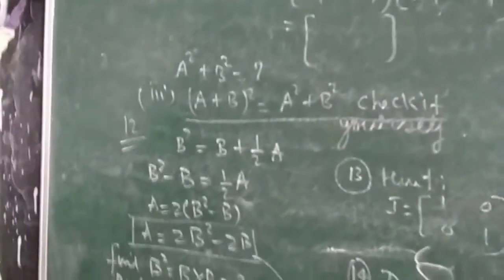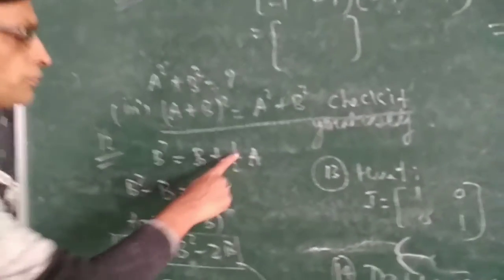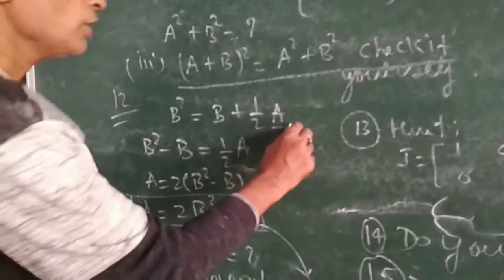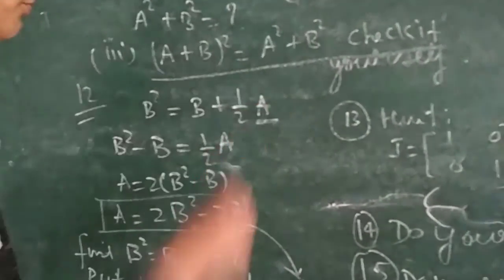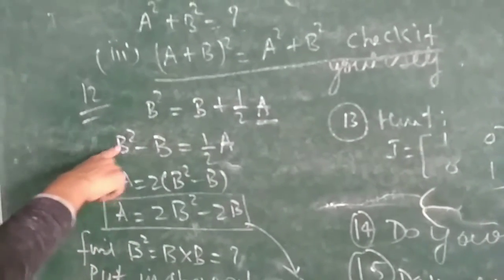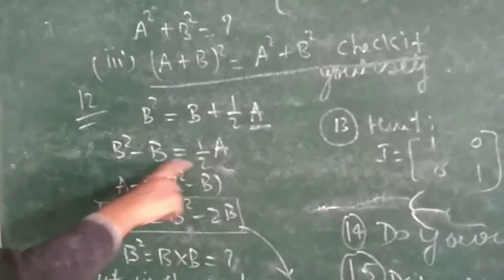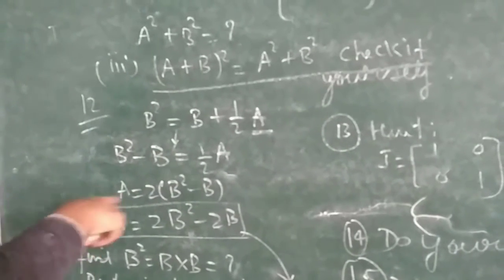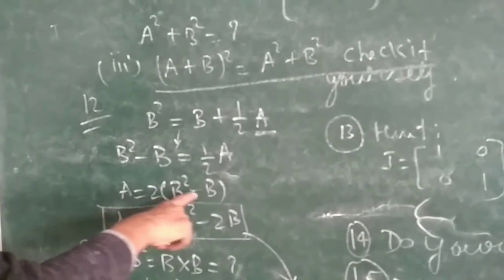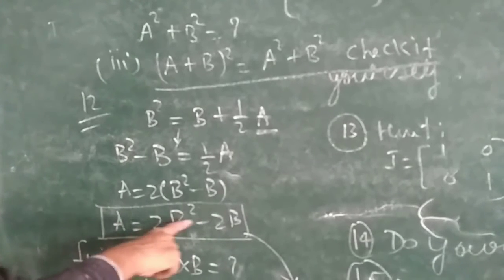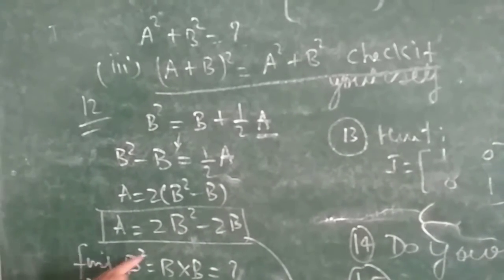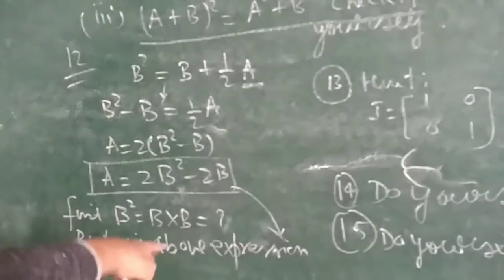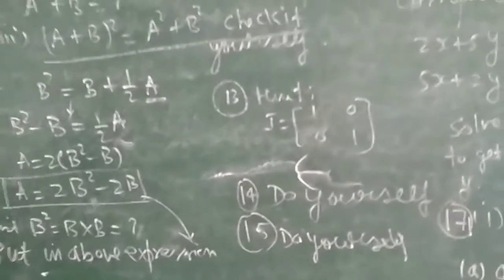Now question number 12: b squared equals (b plus r) into a. We have to find the value of a — what is the method to find a. b squared minus b equals r·a. First write this, then simplify. So a equals 2 in bracket (b squared minus b), then a equals 2b squared minus b. Find b squared as b into b and put it in the above expression to get the value of a.